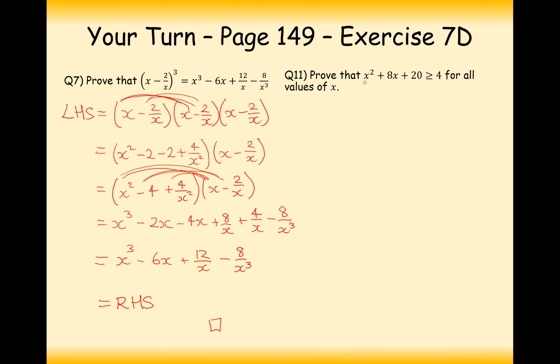Prove in question 11 now that x squared plus 8x plus 20 is greater than or equal to 0 for all values of x. Now we haven't seen an example like this but we have seen an example where we have completed the square. So what I'm going to do is I'm going to take over to the other side the 4 to make it a 16 on the other side. Now I'm going to complete the square. So I'm going to get x plus 4 squared take away 16, add the 16. So I've got nothing on that side there. So now I've got something that's greater than 0.